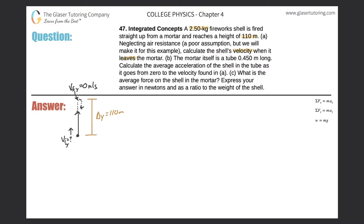Another thing not given but assumed: this is essentially a free-fall problem, meaning the object is freely suspended in the air. The force pulling on it is gravity, so the firework is experiencing an acceleration due to gravity of negative 9.8 meters per second squared. So if I want to find the initial velocity and I know these three things, the formula to choose is: final velocity squared equals initial velocity squared plus two times acceleration times displacement in y.